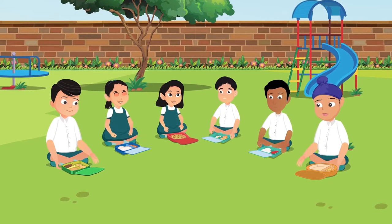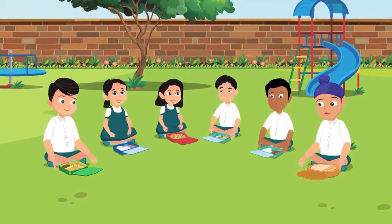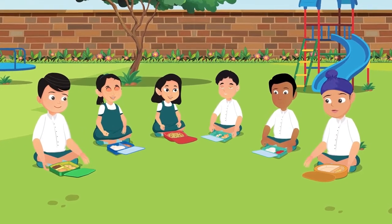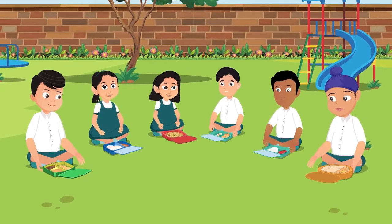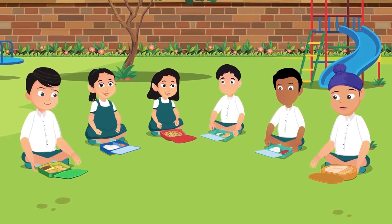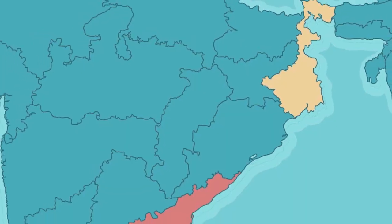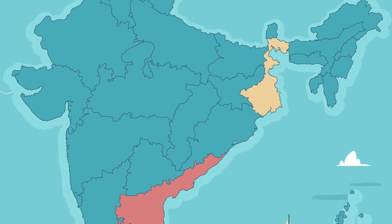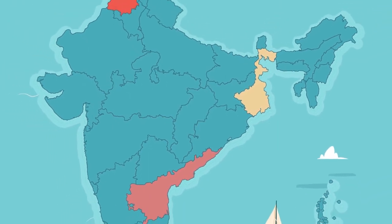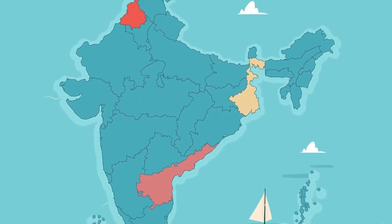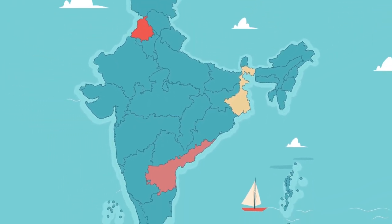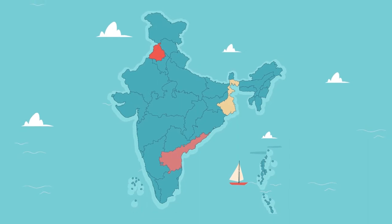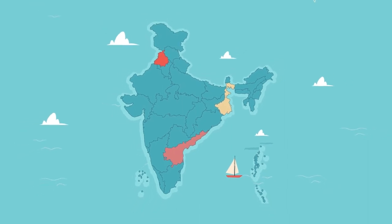Hello children, today let's travel further in our journey to understand food in different regions of India and the world. Different food items are consumed — this depends upon what kind of things are easily grown and available in that region.